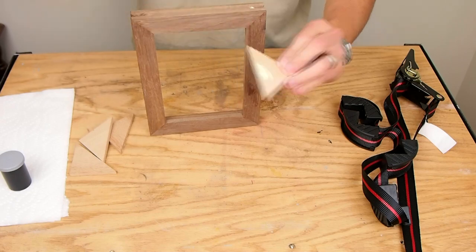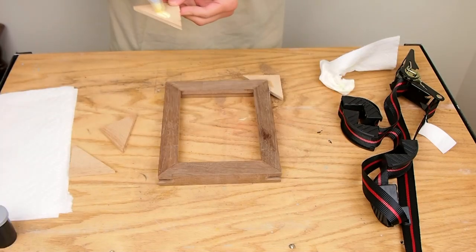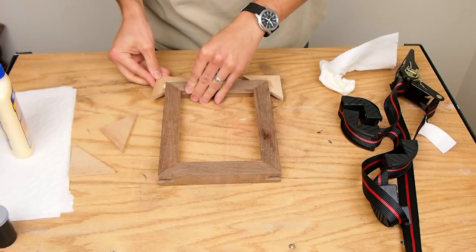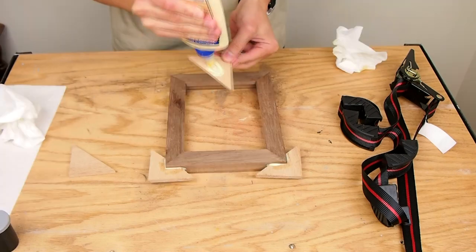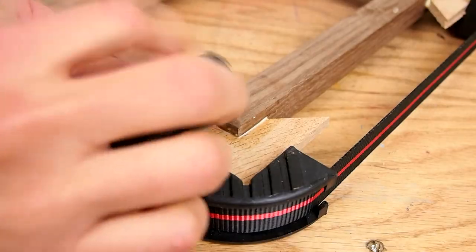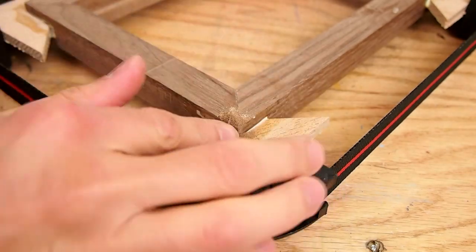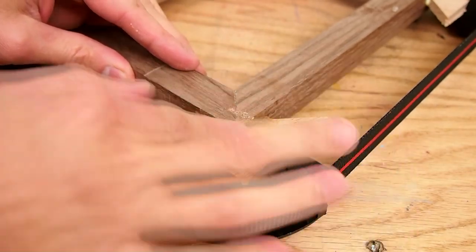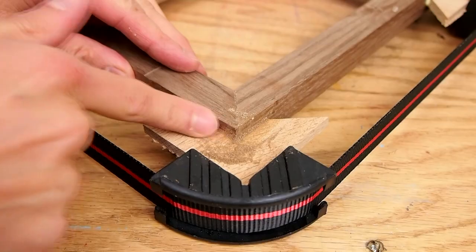Then I glued the oak triangles into those grooves. You can see how ridiculously big those triangles are. I could have gotten away with much smaller ones. I mixed some walnut sawdust with the wood glue to fill in any gaps around the triangles. Then I let the frame dry overnight.